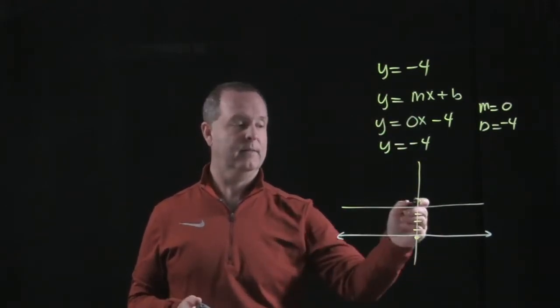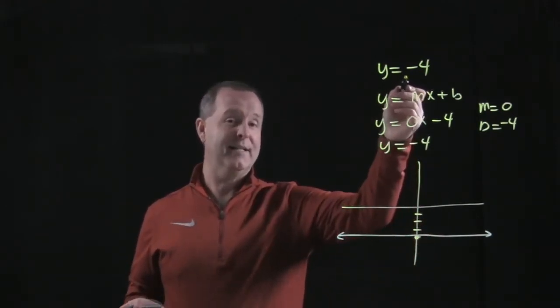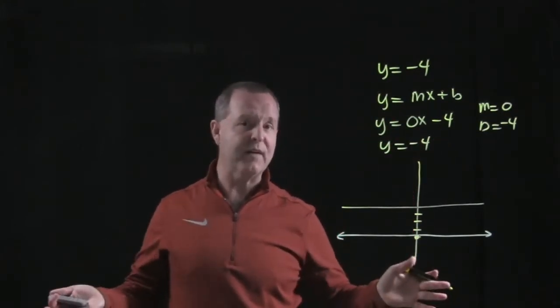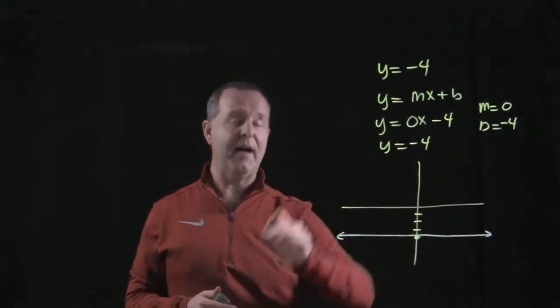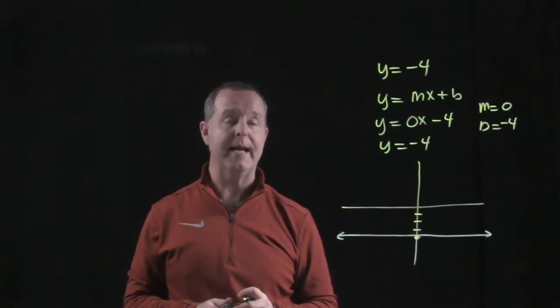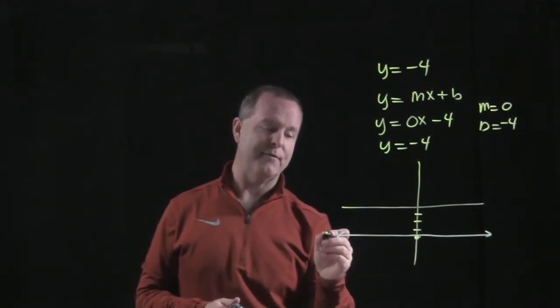What if x was 6? There's no x in there, so my y is negative 4. So regardless of what value of x we choose, my y value will always be negative 4. And that's why I have a horizontal line.